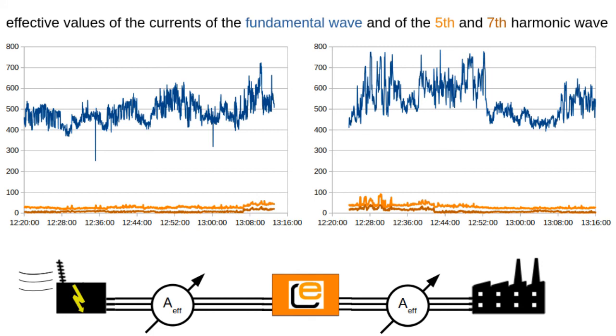In the second time range when the harmonics come from the grid side, the currents on both sides are similarly large. In this measurement 550A on the grid side and 520A on the factory side. In this case, therefore, less energy is saved than in the first time range.